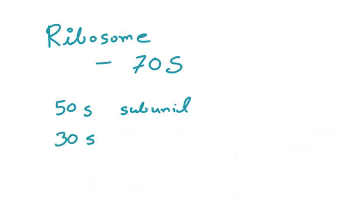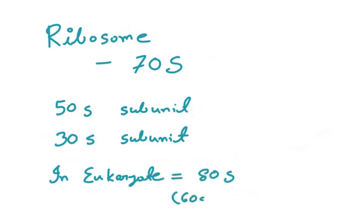Now let's see about the ribosomes. The bacterial ribosomes are 70S in size. There are two subunits: 50S subunit and 30S subunit. In case of eukaryotic cell, ribosome is 80S and the subunits are 60S and 40S.